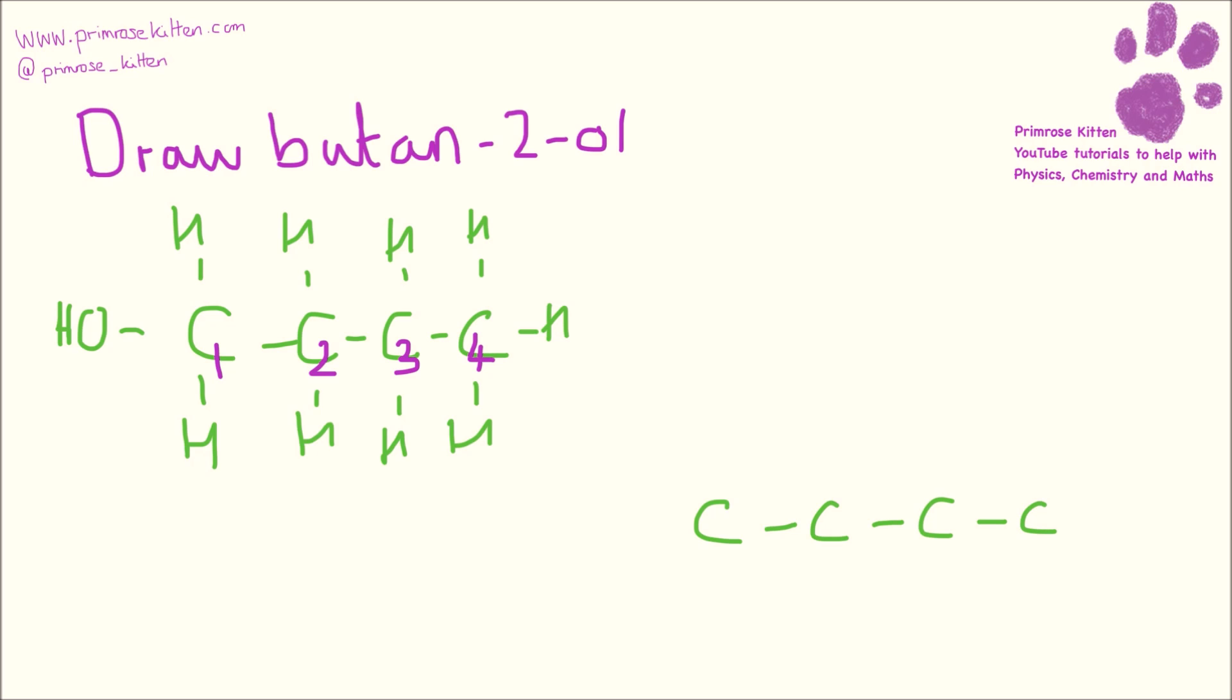But instead of putting the OH group on carbon number one, it's going to go here on carbon number two. So that is where our alcohol group is going to go, and then we can just fill in the rest with hydrogens.